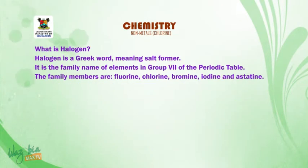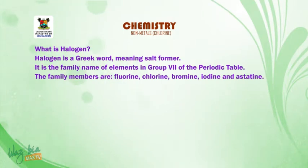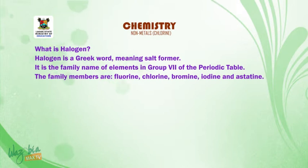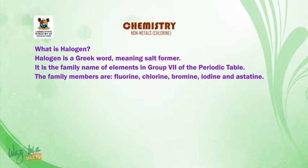What is halogen? Halogen is a Greek word meaning salt former. It is the family name of elements in group 7 of the periodic table. The family members are fluorine, chlorine, bromine, iodine and astatine.